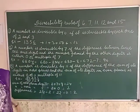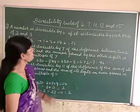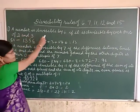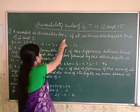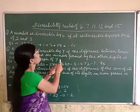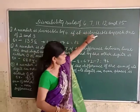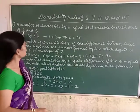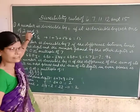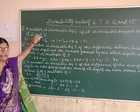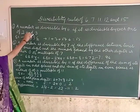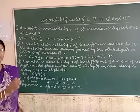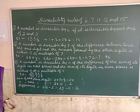What is the divisibility test of 6? A number is divisible by 6 if it is divisible by each one of 2 and 3. That means a number is divisible by 6 if it is divisible by 2 and also divisible by 3.